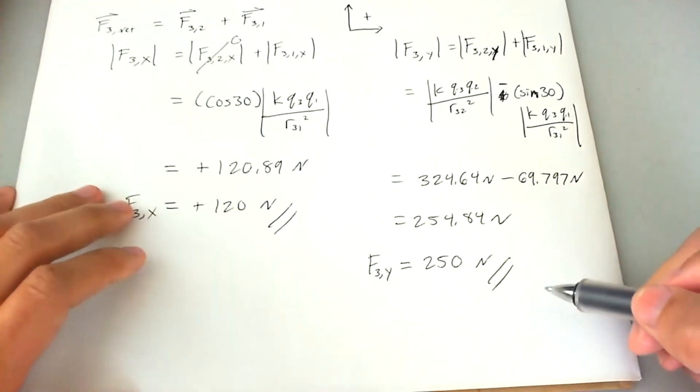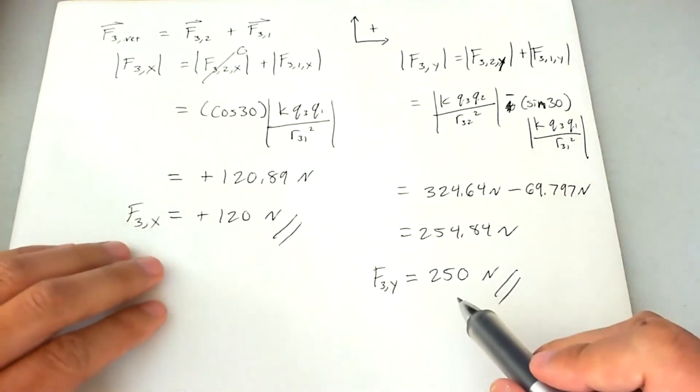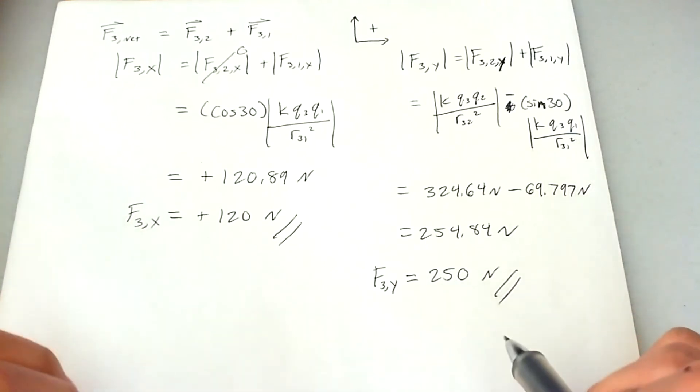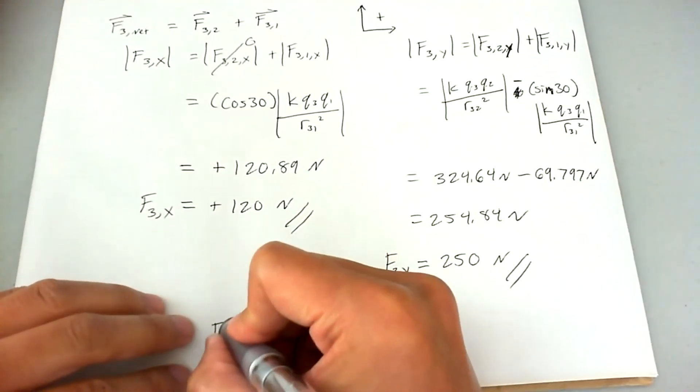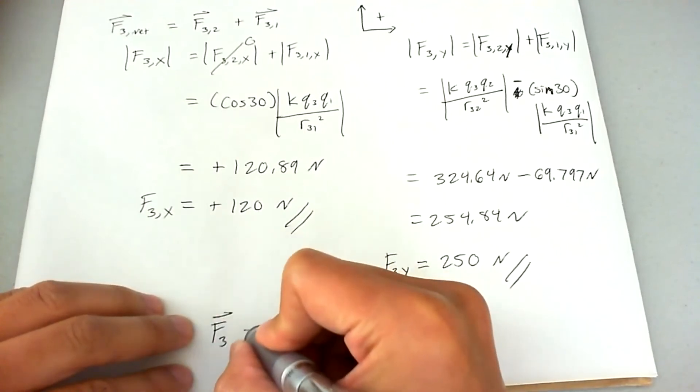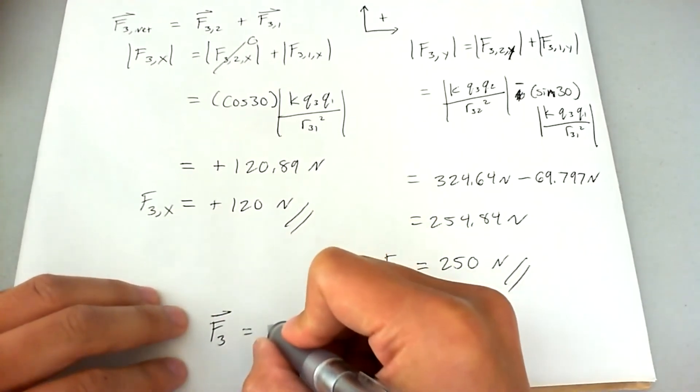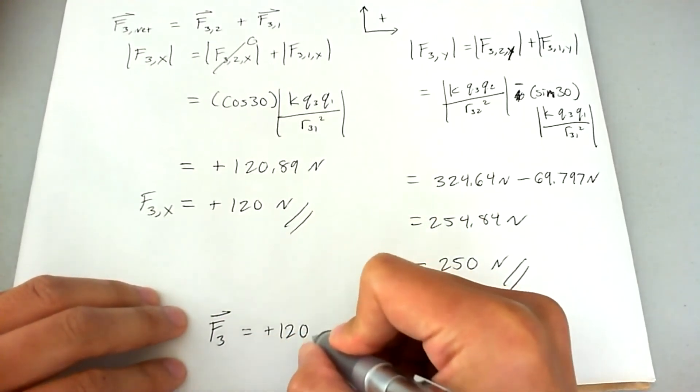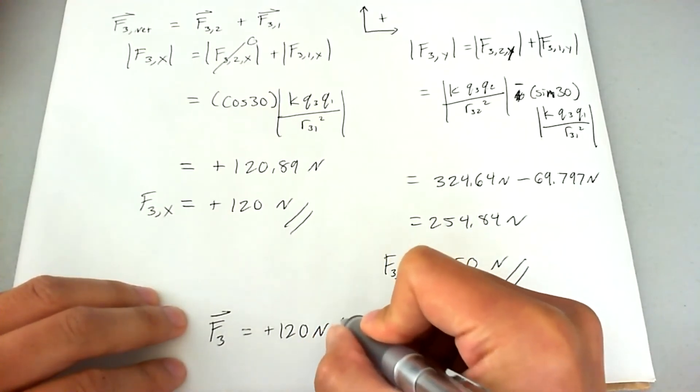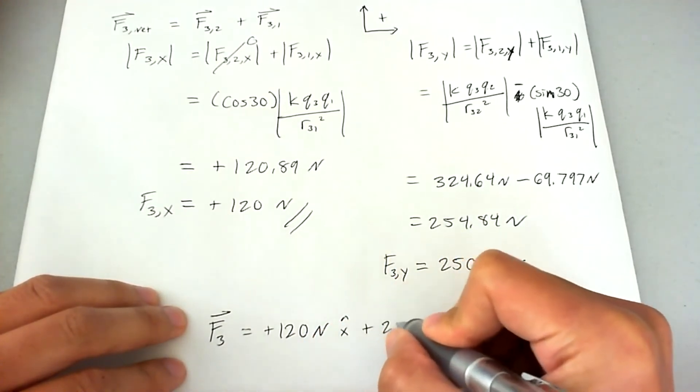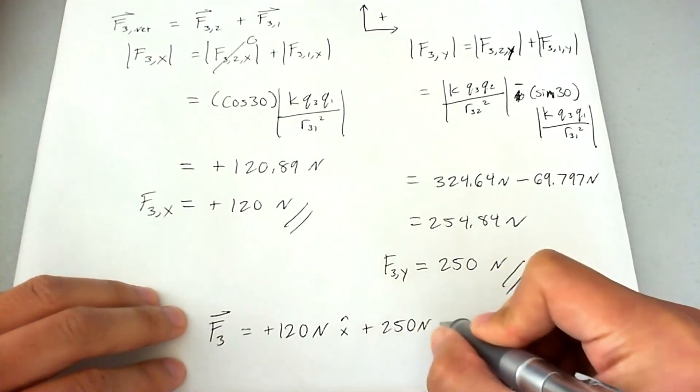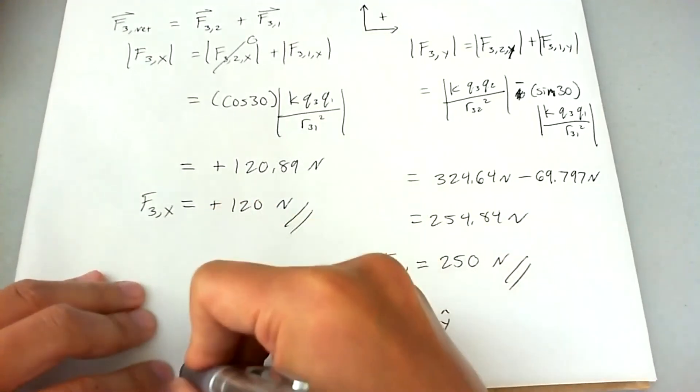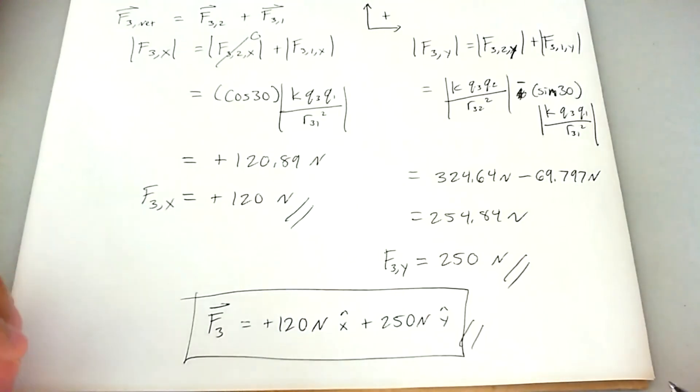Now you can go ahead and put this on the test if I ask for the total force acting on charge three. And this is totally acceptable. The best way to write it is like this and box that up. That's the most appropriate form of writing it.